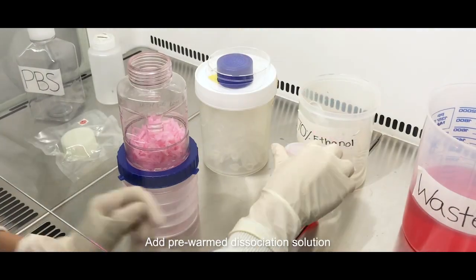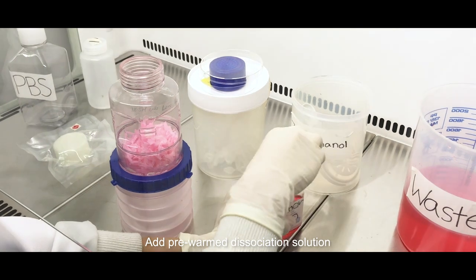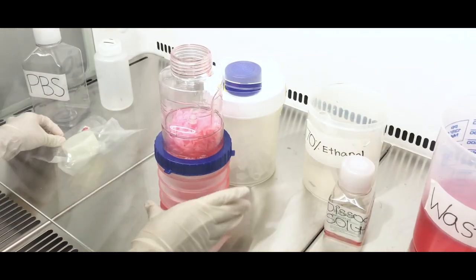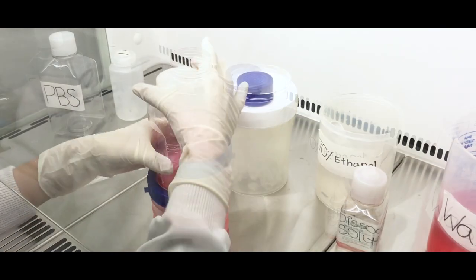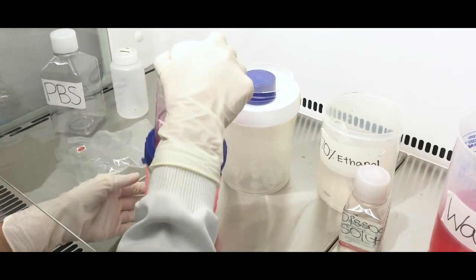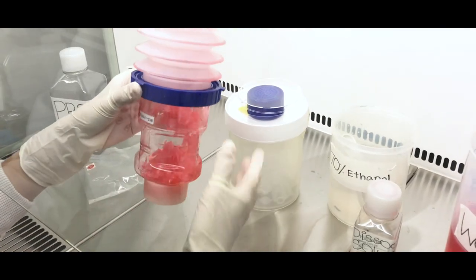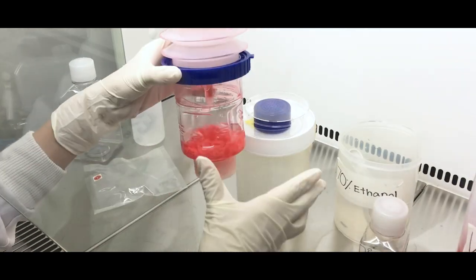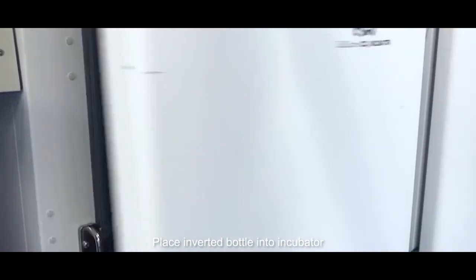Add 120 milliliters of pre-warmed dissociation solution and cap the bottle with a white non-vented cap. Then invert the bottle and swirl it to ensure all carriers are submerged in the solution. Place the inverted bottle back into the incubator.